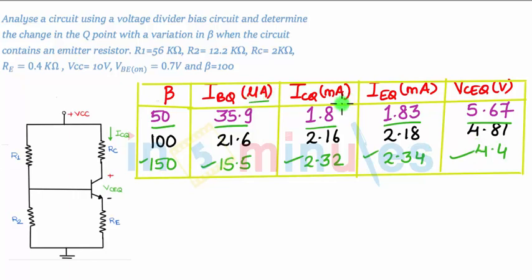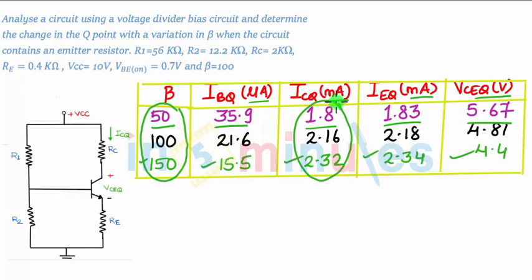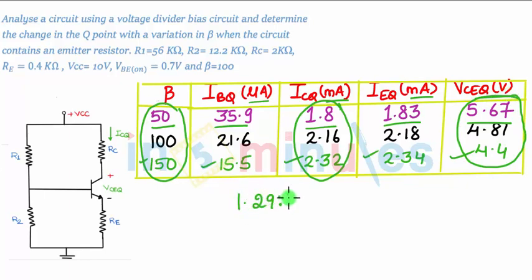Looking at the table, the change in beta is 3-to-1 — that is, the ratio between 50 and 150 is 3:1. However, the collector current and collector-emitter voltage VCEQ are changing by just 1.29-to-1, whereas in fixed bias this ratio was very large. Hence we can conclude that voltage divider biasing is a stable bias.